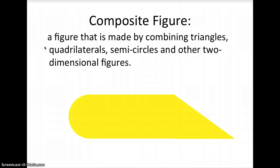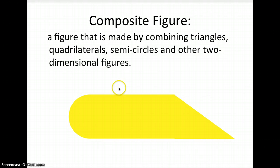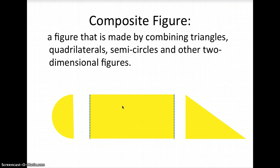First you need to know what is a composite figure. A composite figure is a figure that is made by different figures such as triangle, quadrilateral, semicircles and other two dimensional figures. For example, this figure that you see is composed of more than one figure. So let's divide them — first you will see a half circle or a semicircle and then you have a triangle. So in that composite figure you actually have three figures put together.